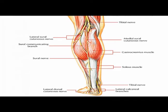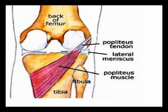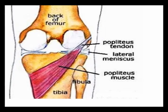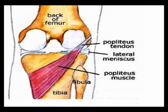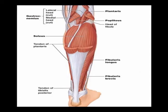The popliteus muscle is located in the posterior knee. In between its tendon and the posterior surface of the knee lies a bursa called the popliteus bursa. The popliteus muscle is classified as a muscle in the posterior leg, posterior to the knee joint.